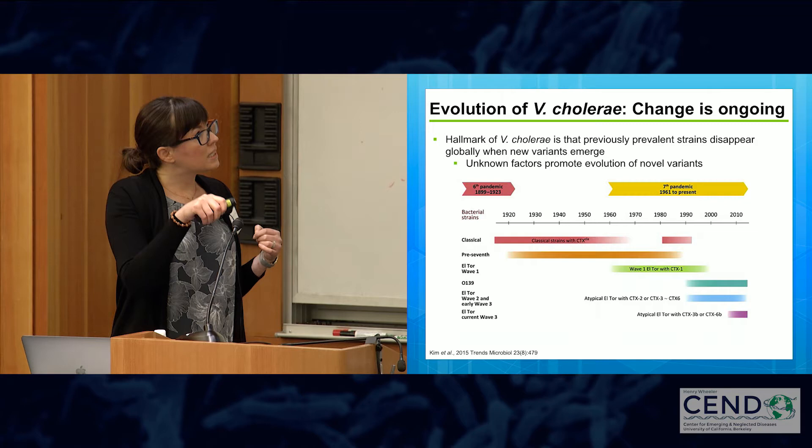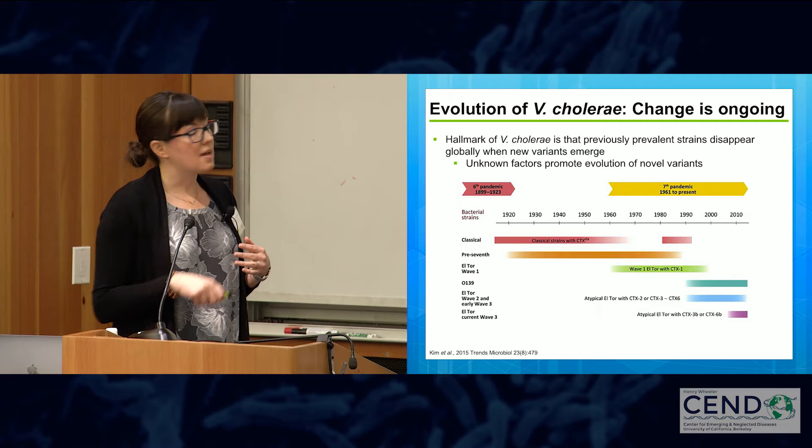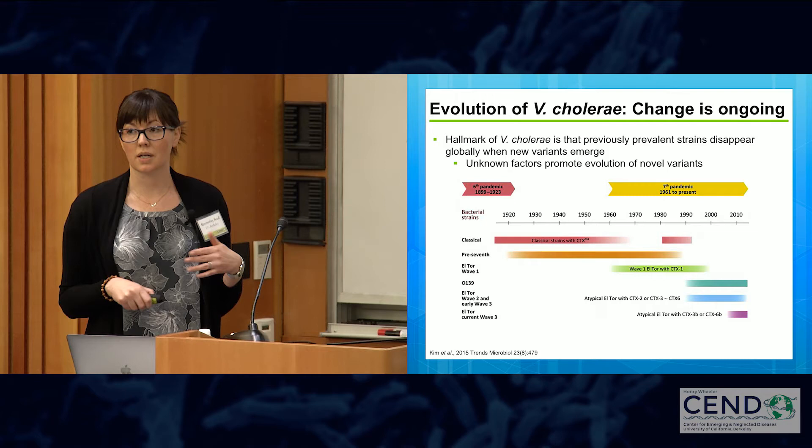Even within the seventh pandemic, we see waves of transmission where new variants of epidemic Vibrio cholerae strains arise, spread, and then die out and are overtaken. There are very interesting selective pressures promoting the selection of these variants that my lab and many others are interested in.